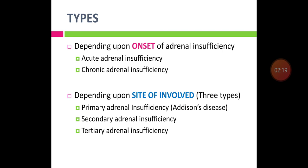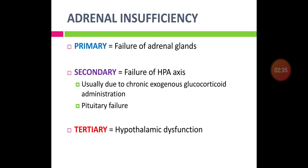Depending upon the site involved, adrenal insufficiency is classified as primary, secondary, or tertiary. Primary adrenal insufficiency, also called Addison's disease, is where the pathology lies in the adrenal gland itself — failure of the adrenal glands to secrete glucocorticoids, mineralocorticoids, or androgens.